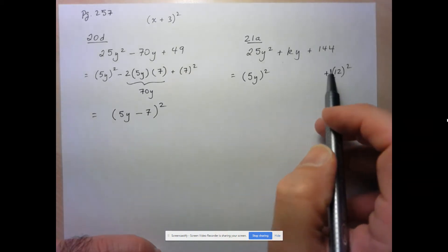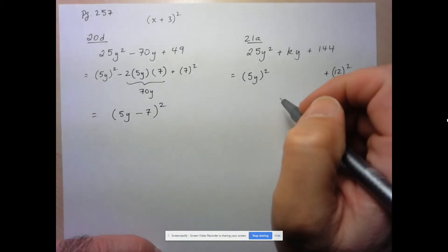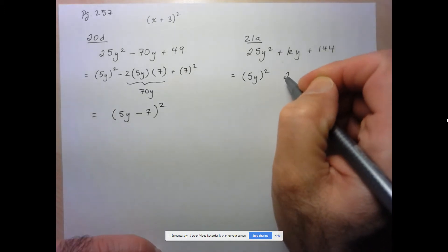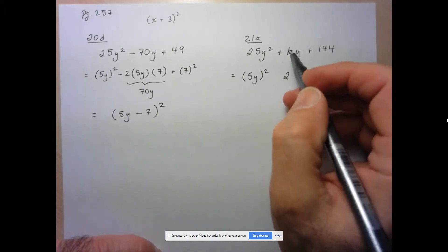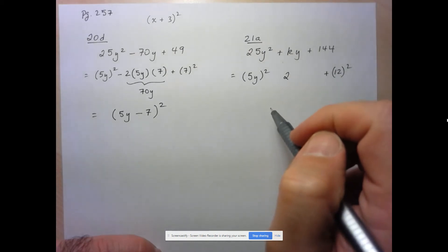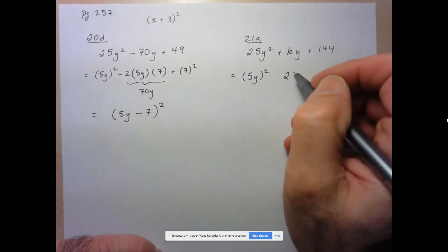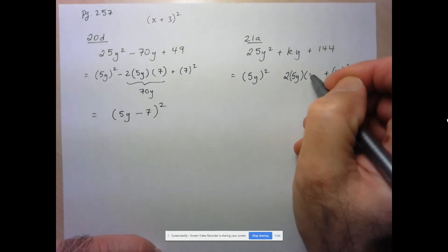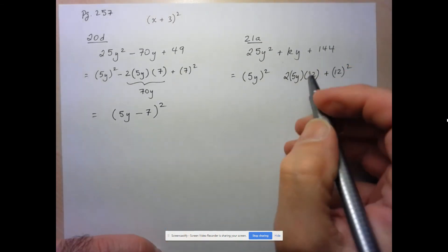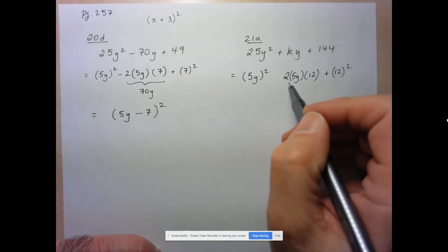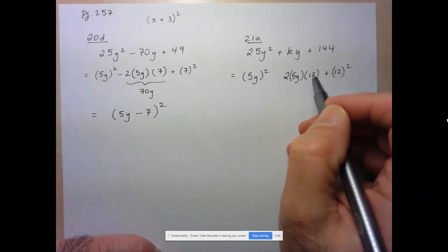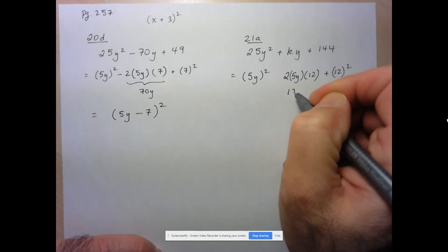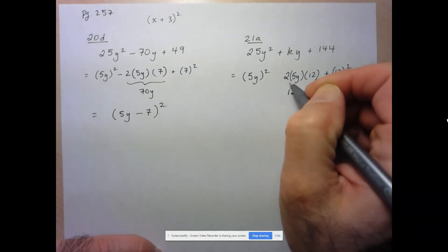So in other words, what I need is I need k to be equal to 2, or at least this k value here is going to be able to be gotten by doing twice the product of first, 5y, times last, which is 12. So when I rewrite this, what do I have? Well, 2 times 5 is 10, times 12 is 120y.